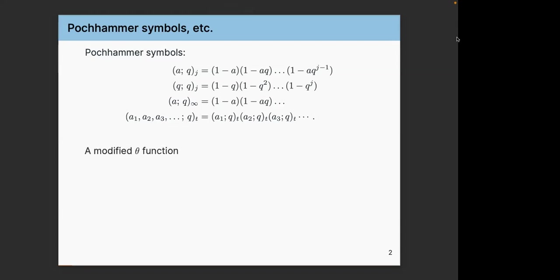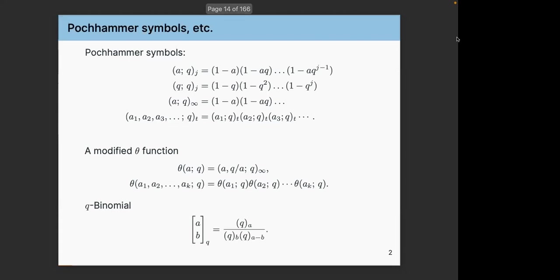I'll also need a modified thing. Since we're talking about characters of rational VOAs, you expect modular things to come out, and you naturally see theta functions. I'll denote this particular Pochhammer by theta of A, Q. If you have A, then you also have Q divided by A — these symmetric type products are what make things modular. There is a compressed notation I need, and I'll need the Q-binomial. I've copied them here for reference.